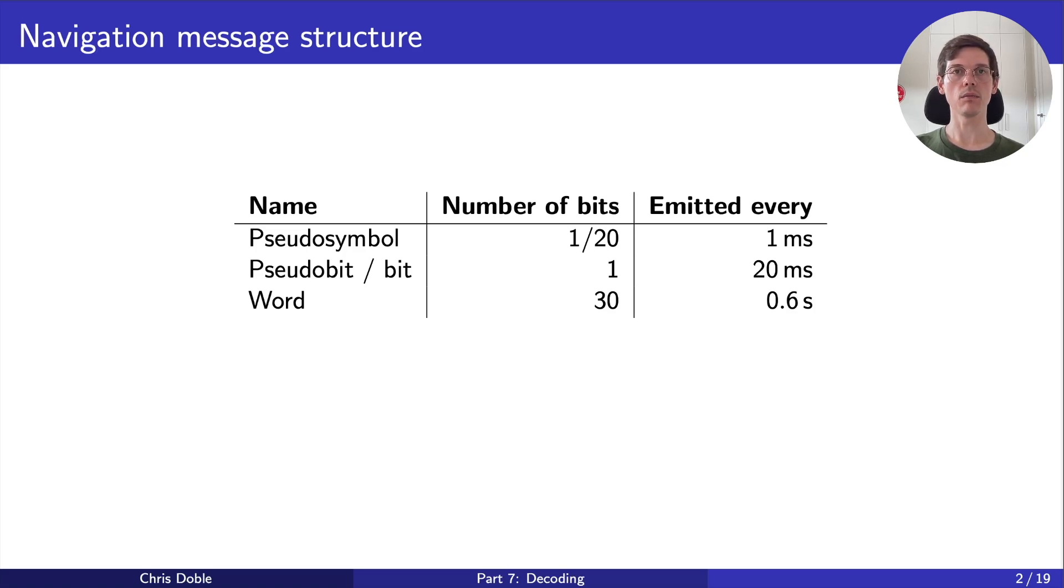Words are collected into groups of 10 to make subframes. A subframe is a higher level structure containing some of the parameters we need to compute our location, for example the satellite's clock or orbital parameters. There are five types of subframes, each containing different parameters.